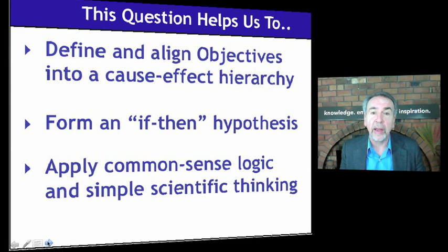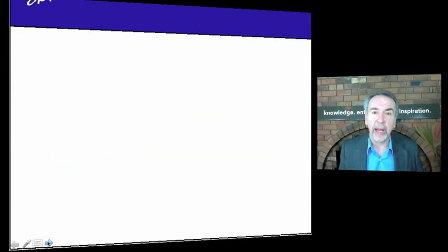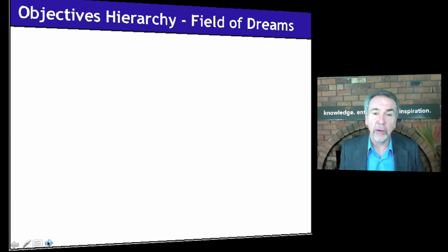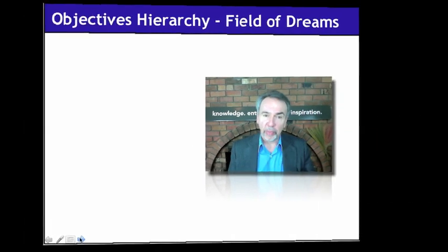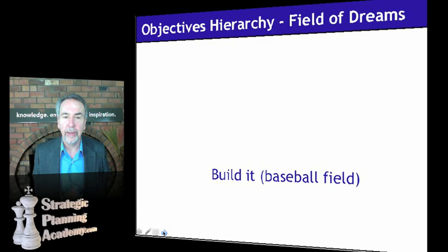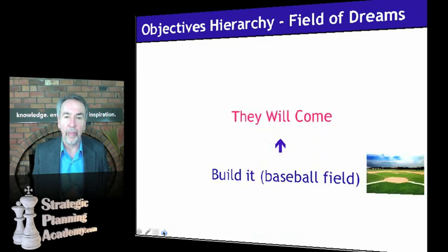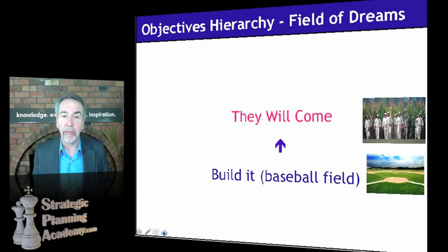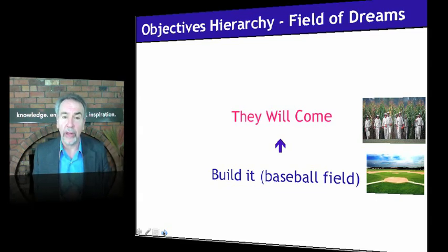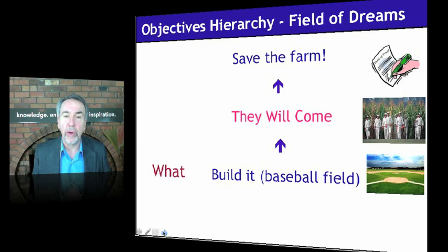It lets us apply some common-sense logic and simple scientific thinking. Have you seen the movie Field of Dreams with Kevin Costner? He was an Iowa farmer going bankrupt, standing in the middle of his cornfield, and he had this idea to build a baseball field. You probably know the classic line from that movie: 'If we build it, then they will come.' That's an example of an if-then relationship among objectives. And there's an even higher-level objective that motivated the project — to save the farm.